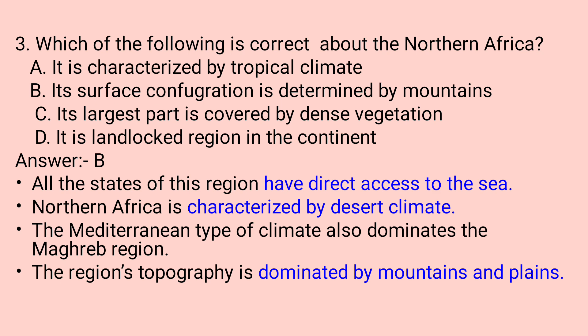Question number three: Which of the following is correct about Northern Africa? A. It is characterized by tropical climate. B. Its surface configuration is determined by mountains. C. Its largest part is covered by dense vegetation. D. It is a landlocked region. The correct answer is B — the surface configuration of North Africa is determined by mountains, like that of Morocco, which is known for having high mountains.